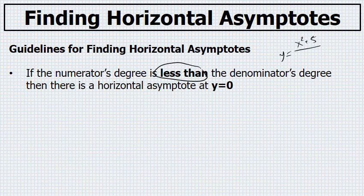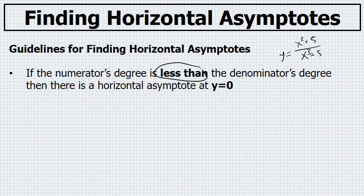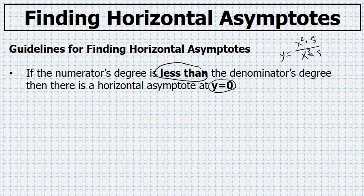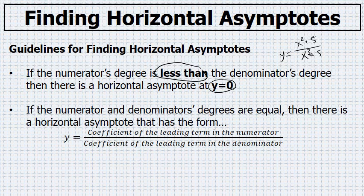the degree of the denominator is bigger and the degree of the numerator is less than the degree of the denominator, so there is a horizontal asymptote at the line y equals zero.